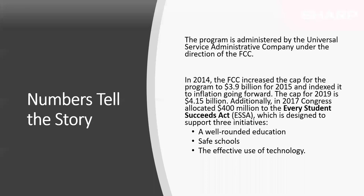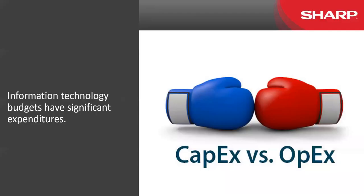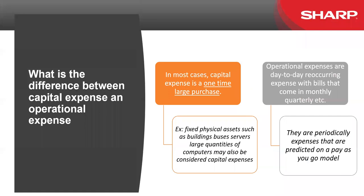When it comes to funding, consider CapEx versus OpEx. Technology can be bundled as a service. A capital expense is a one-time large purchase, but if you look at the potential for a monthly recurring charge — technology as a service, classroom as a service, managed network services that tie everything together — it becomes more of an operational expense rather than a one-time capital expense.